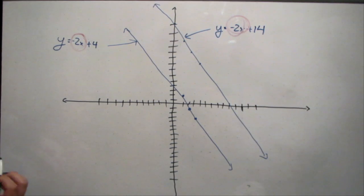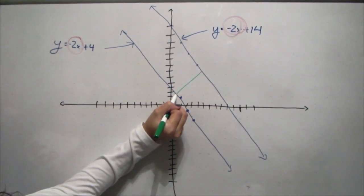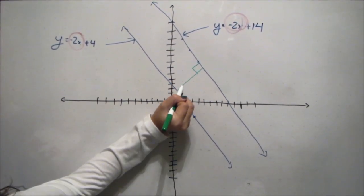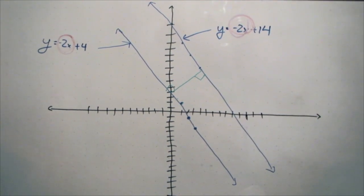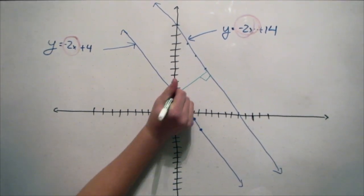Once you know they are parallel, you have to write the equation of the line between the two parallel lines. First, you take the y-intercept of one of the lines. In this case, the y-intercept is (0, 4).